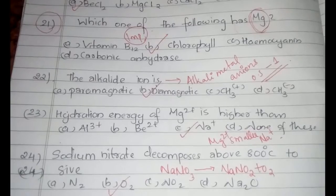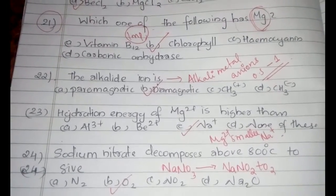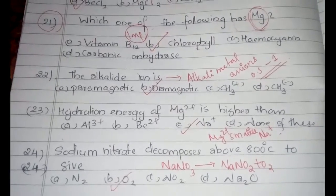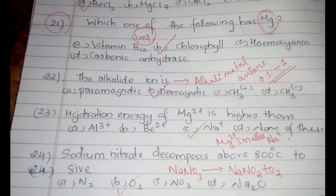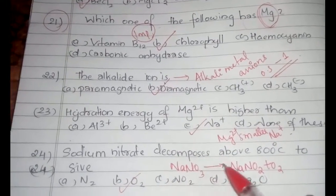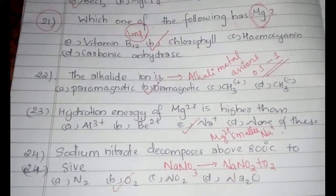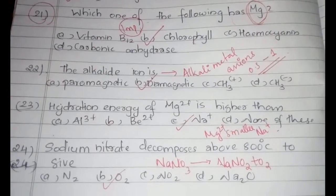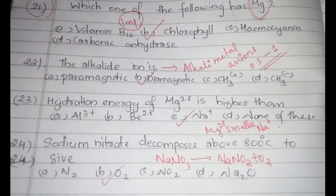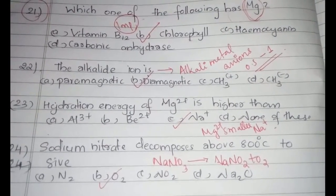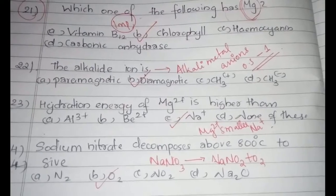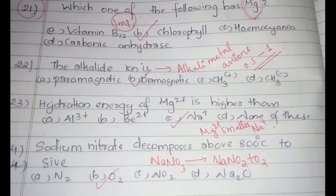The 24th question: sodium nitrate decomposes above 800°C — this is a previous JEE examination question. Above 800°C it forms oxygen. Write down this reaction along with all the reactions we have discussed today, because they can sum up the whole s-block elements part without needing to read more textbook.